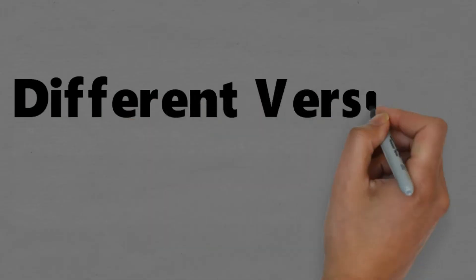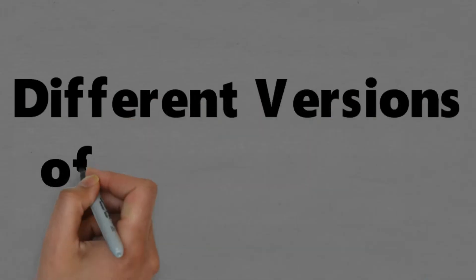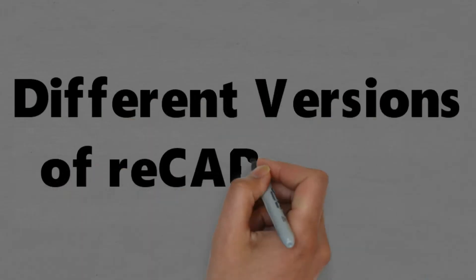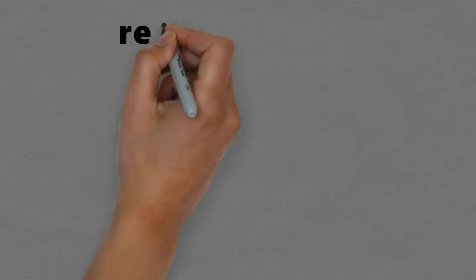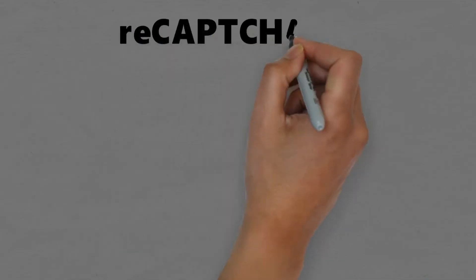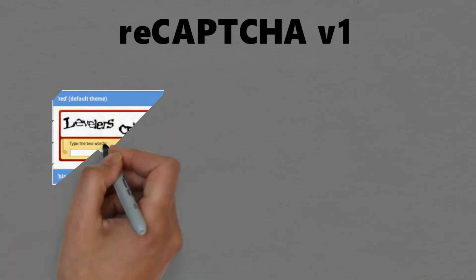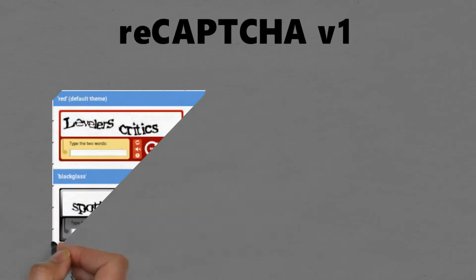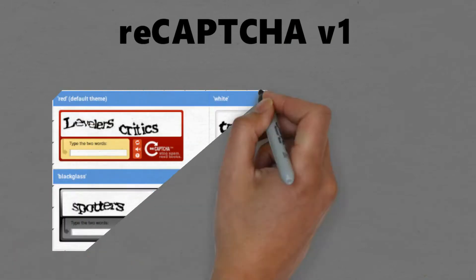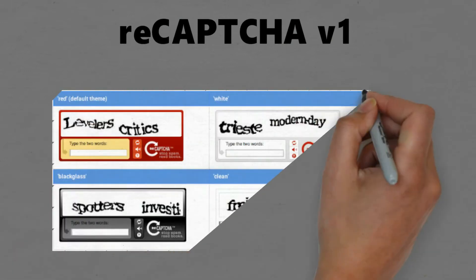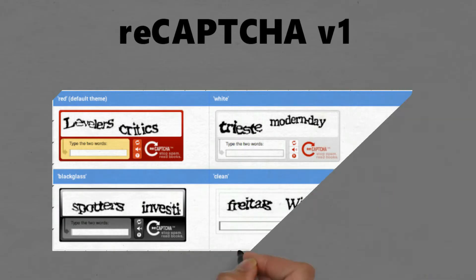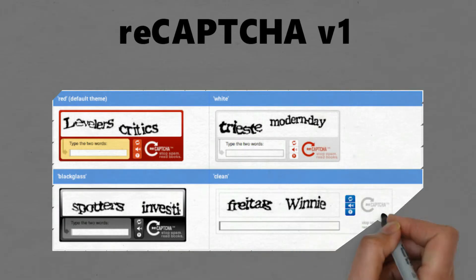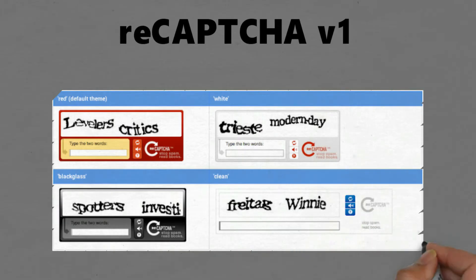Now we will see different versions of reCAPTCHA. reCAPTCHA version 1.0 can take many forms, but common ones include distorted text or numbers. Version 1 is no longer available — it was shut down in 2018.